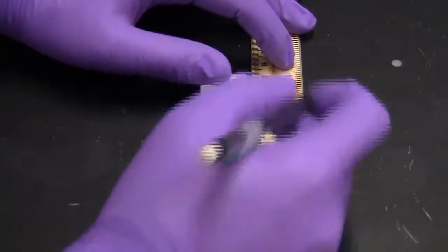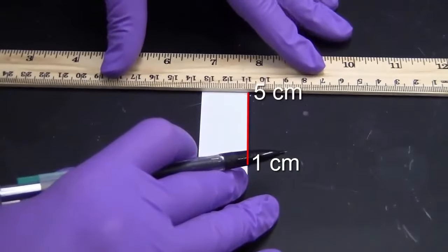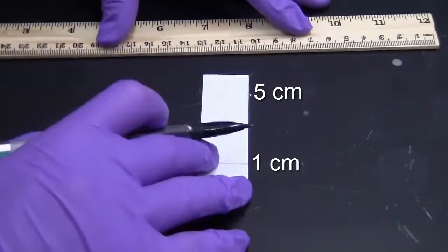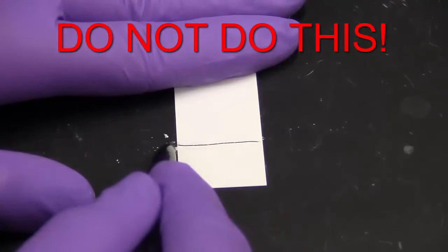Using a pencil and ruler, draw a line 1 cm from the bottom of the plate, then another line 5 cm above the first line. These lines indicate your start and finish. Draw the lines lightly to avoid scratching the silica off of the plate.